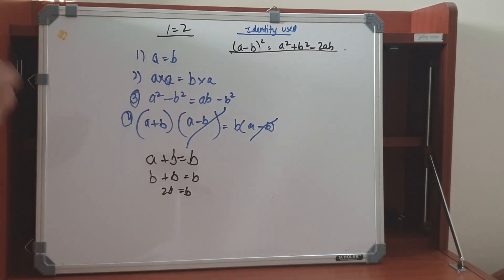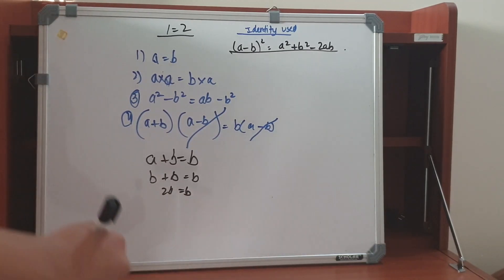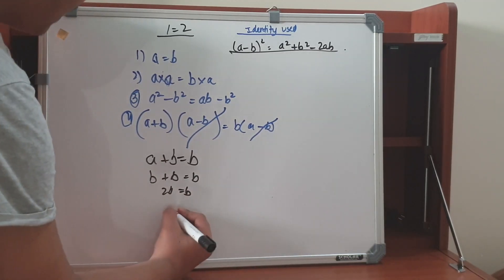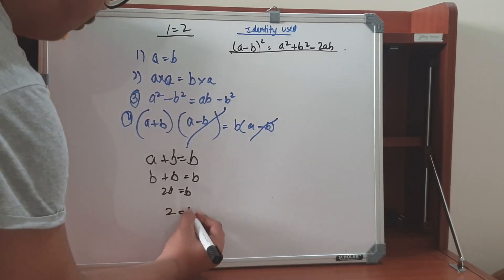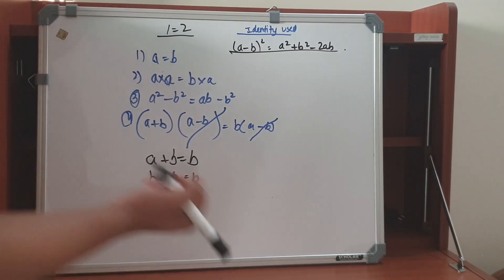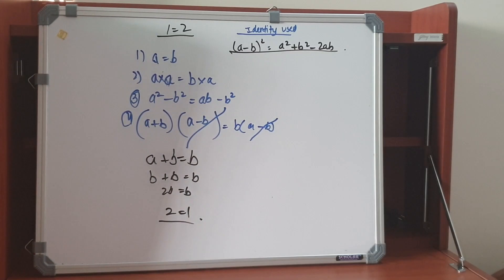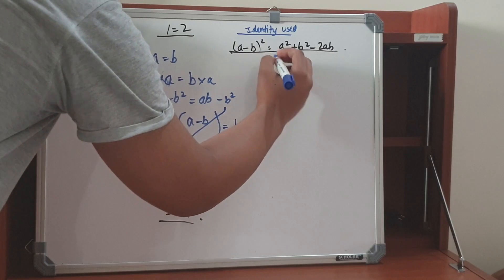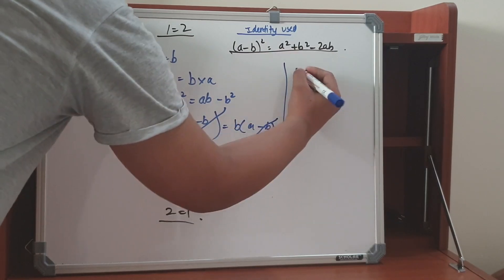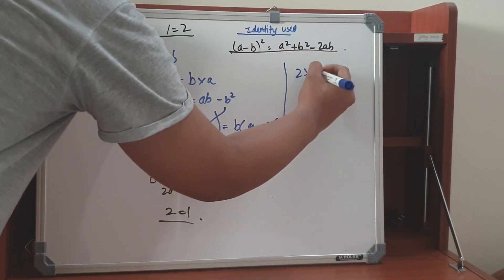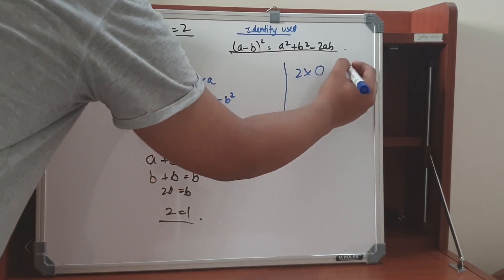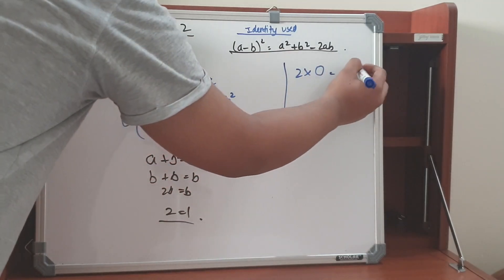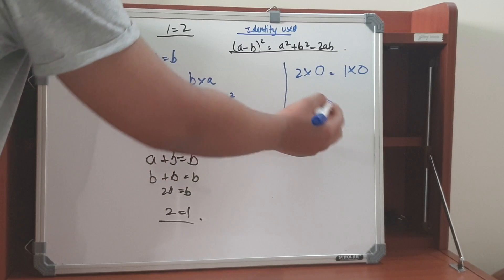So we can divide b from both sides and get 2 is equal to 1. But what is wrong in this equation? Suppose we take an example: 2 into 0 is equal to 1 into 0.